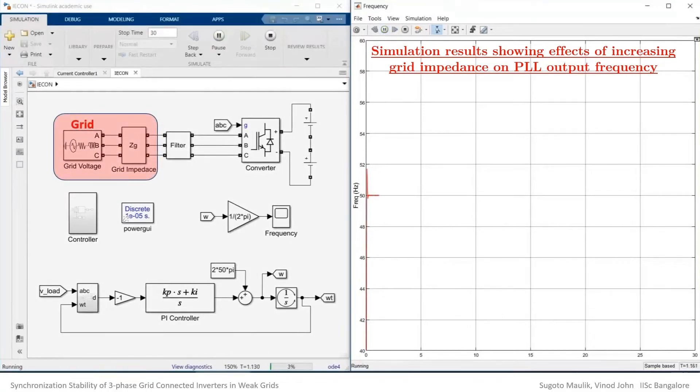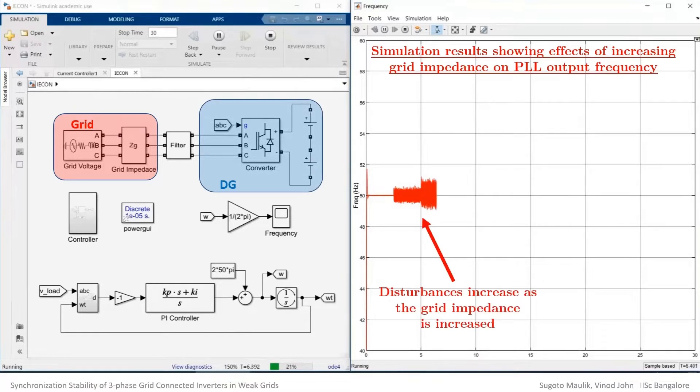To demonstrate this instability, a Simulink model is created wherein the grid is represented by an equivalent voltage source and an impedance, and a DC source and an inverter is used to emulate the distributed generation, which is operated based on frequency input as provided by an SRF PLL.